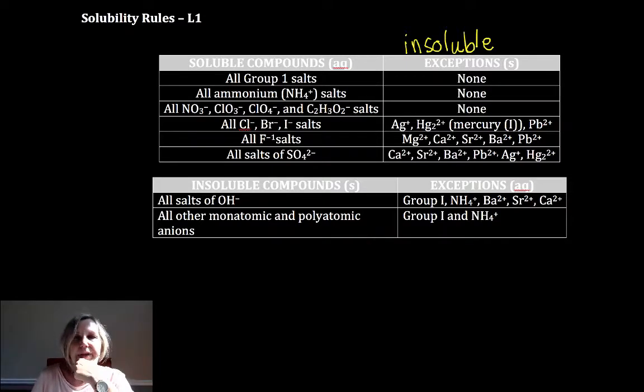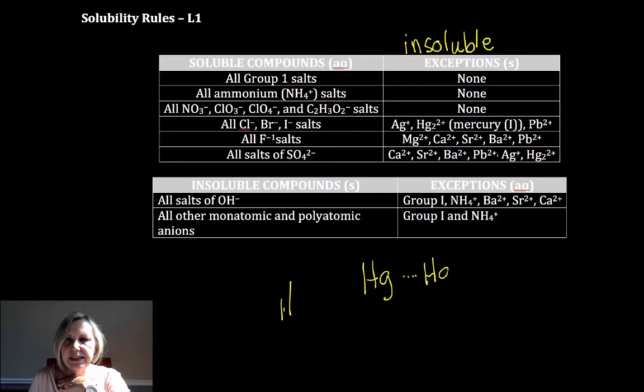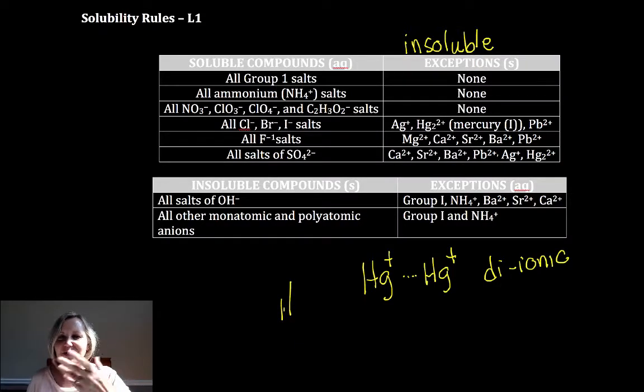Okay, so the exceptions are silver. Oh, what's this? This is a weird ion. Lead two, let's look at mercury one. Mercury one is what I call kind of a diatomic ion. It always comes in pairs. So it's di-ionic, I guess you could say. Di-ionic, I've not used that word before but I like it better than diatomic. And it's kind of Siamese twins. Always comes in pairs.